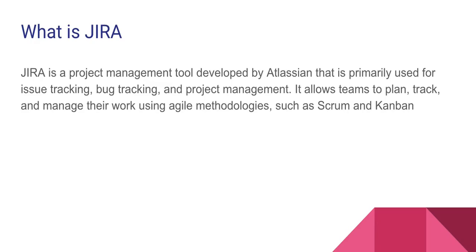Let's say you are building a software and you need 10 features — those 10 features are called issues and they are tracked, meaning you can see who is working on which issue. When you develop those 10 features, there could be bugs — let's say three bugs on those 10 features. Those bugs will also be tracked by Jira, so you can know who is working on what and what stage each item is in, such as whether development is done.